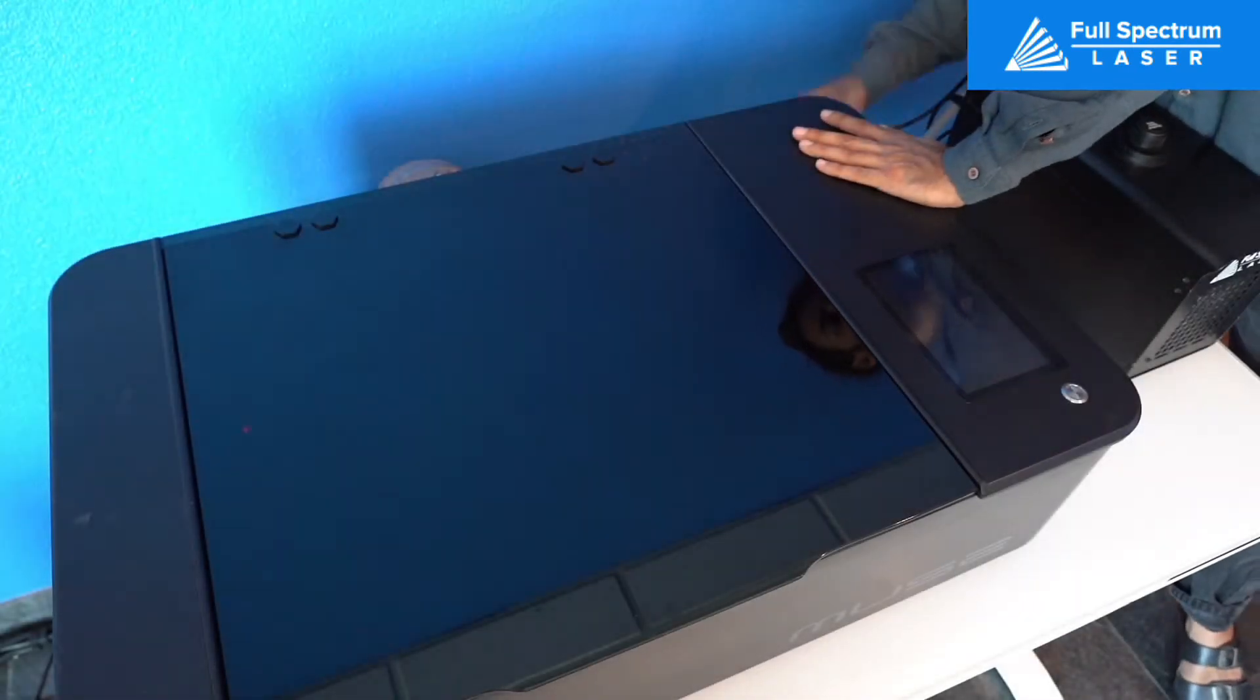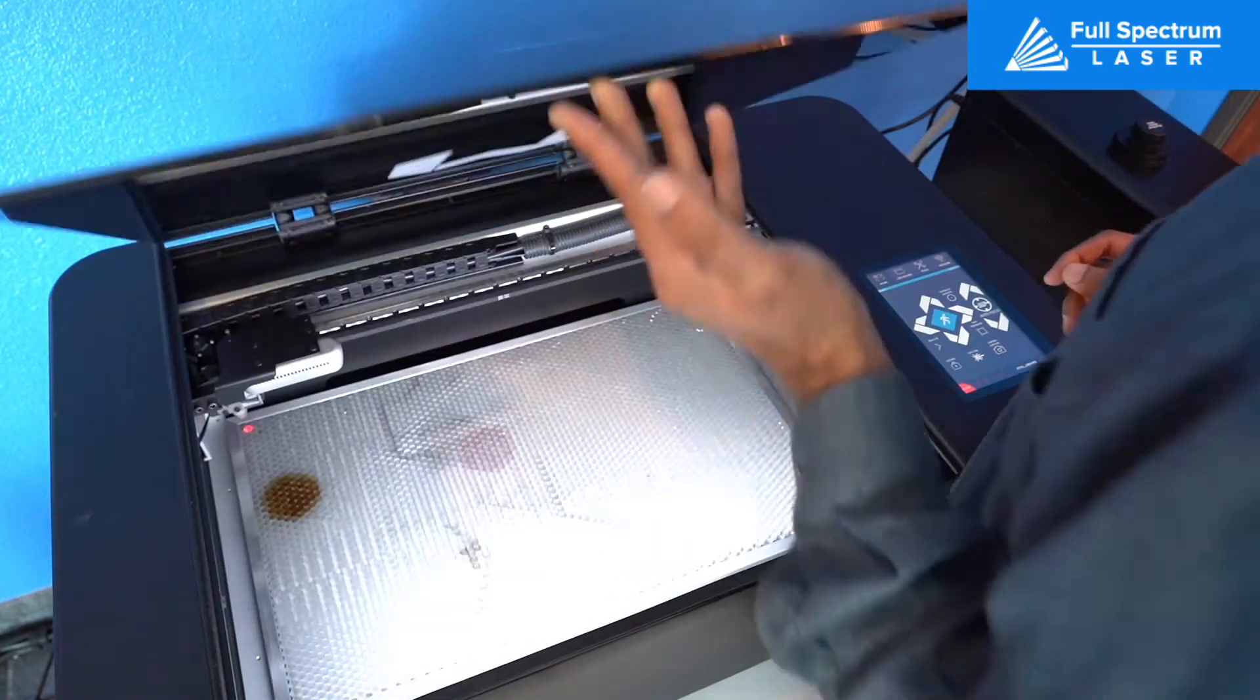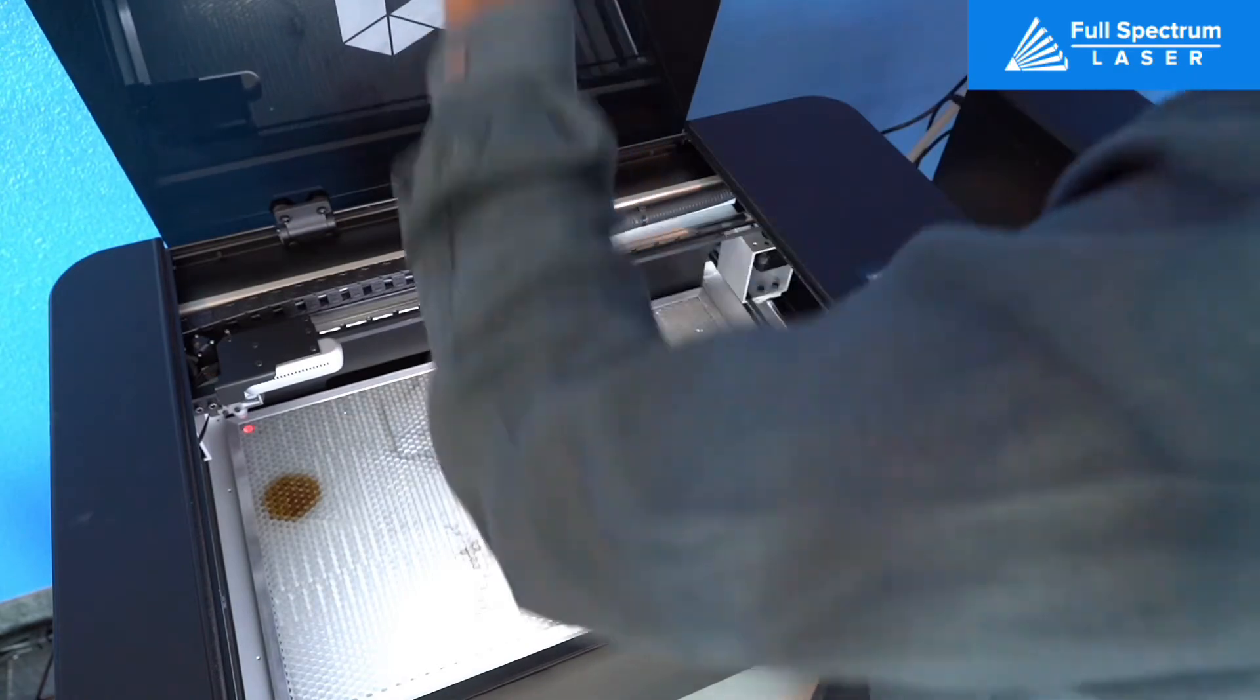First, power on your Muse unit and verify all the connections. Second, carefully take out the honeycomb base and set it aside.